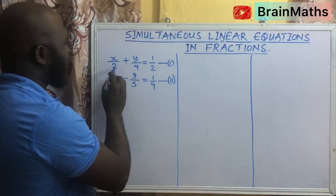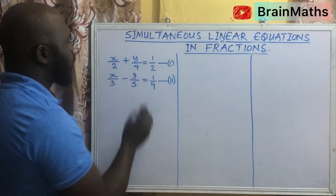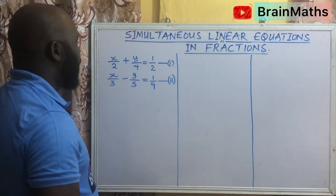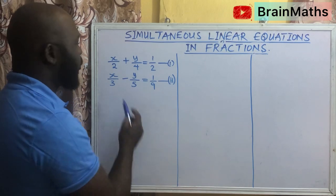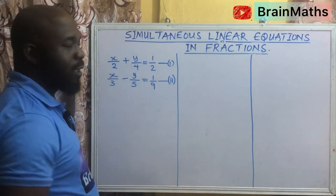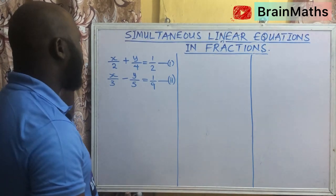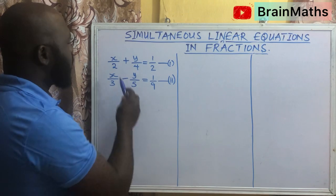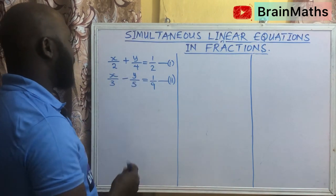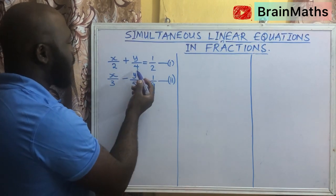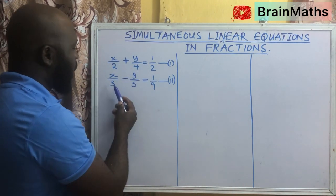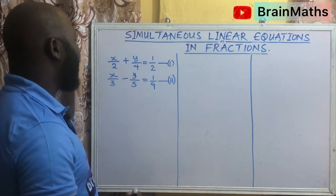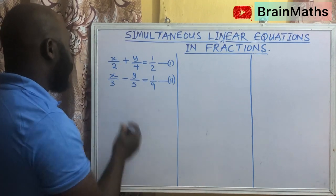So we find the LCM of 2 and 4 in equation 1 as given, and the LCM of 3, 5, and 9 in equation 2 as well. So the LCM of 2 and 4 is going to be 4, while the LCM of 3, 5, and 9 is 45.